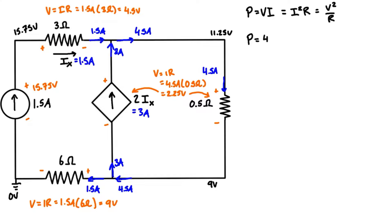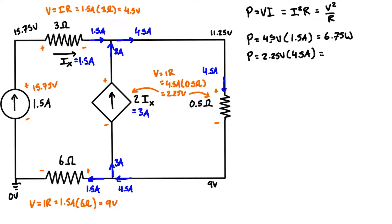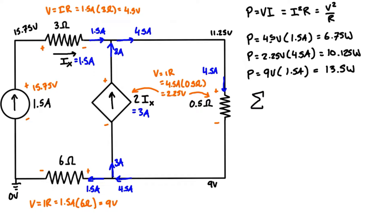Starting with the 3-ohm resistor: power equals 4.5 volts times 1.5 amps, giving 6.75 watts dissipated. For the 0.5-ohm resistor: power equals 2.25 volts times 4.5 amps, giving 10.125 watts. For the 6-ohm resistor: power equals 9 volts times 1.5 amps, giving 13.5 watts dissipated.